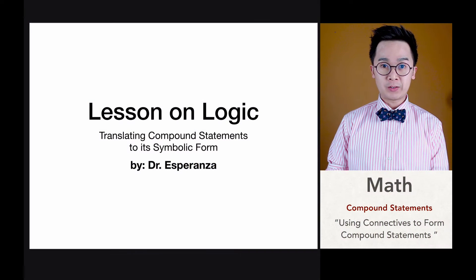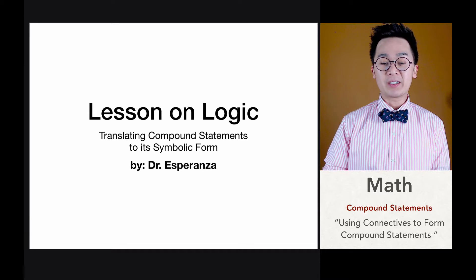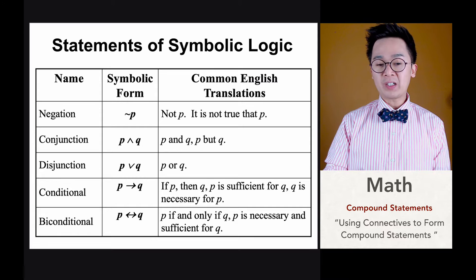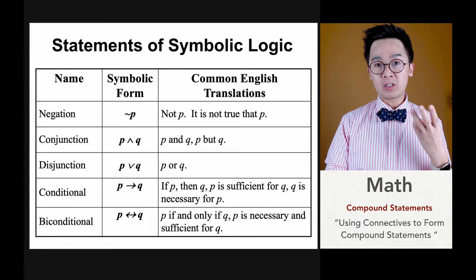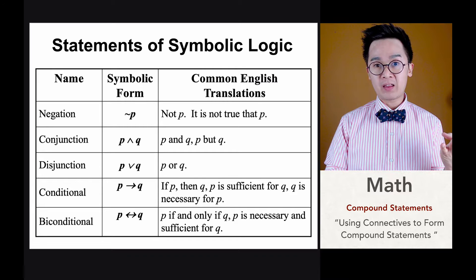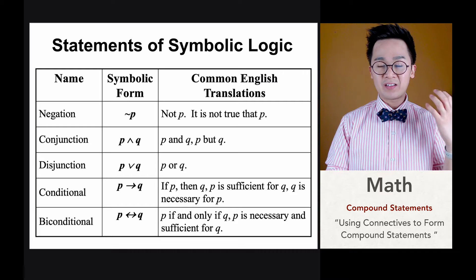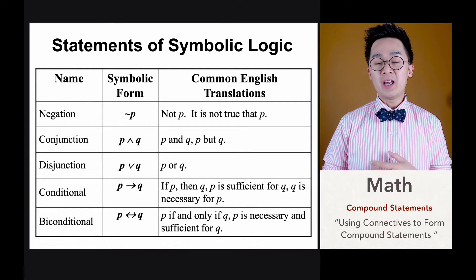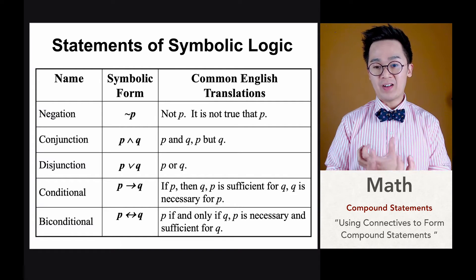Hello everyone, this is Dr. Speranza and today we're going to be working on how we can translate compound statements into symbolic form. The compound statements from the previous lesson include the conjunction, disjunction, the biconditional, and the conditional statements. Knowing the symbols associated with these operations makes it easier to translate statements from symbolic form to English and vice versa.